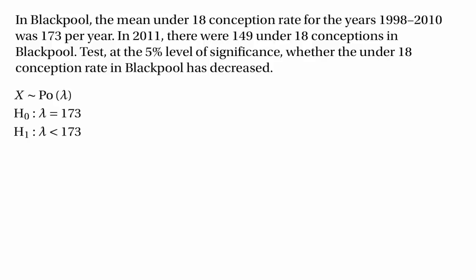To use the normal approximation we need the mean and variance of this Poisson distribution. The mean is always the same as lambda, so the mean is 173. The variance is also lambda, so the variance is also 173. We'll use a different random variable y, which has the normal distribution with mean 173 and variance 173.